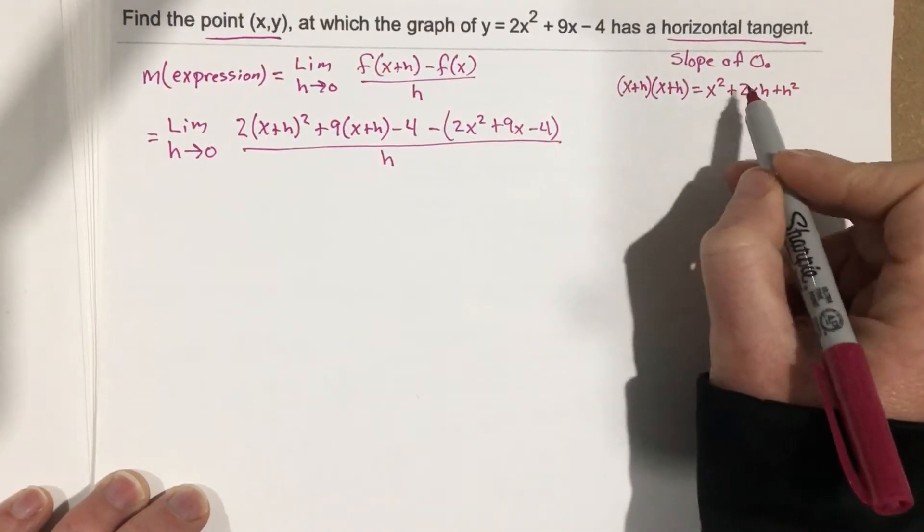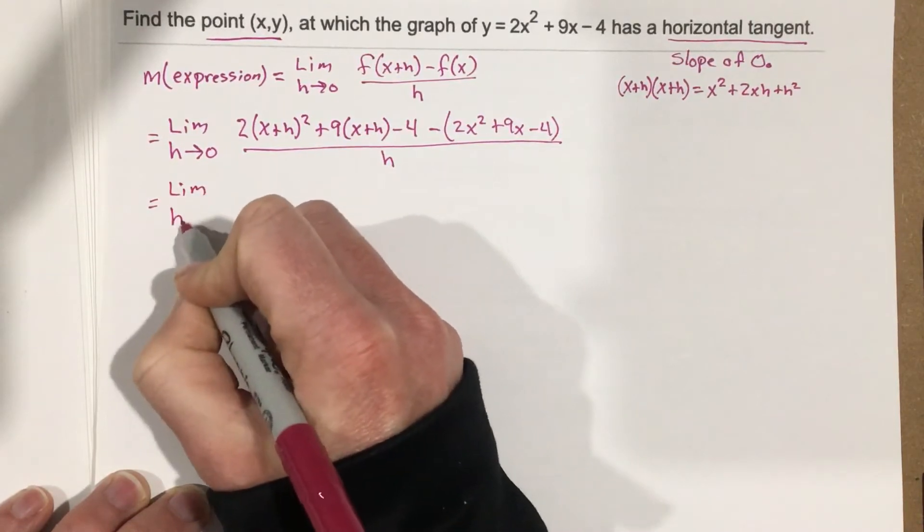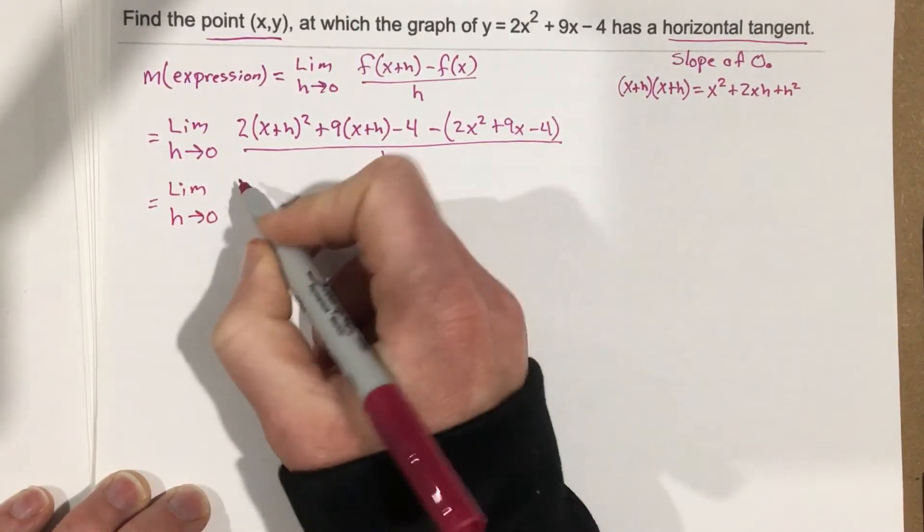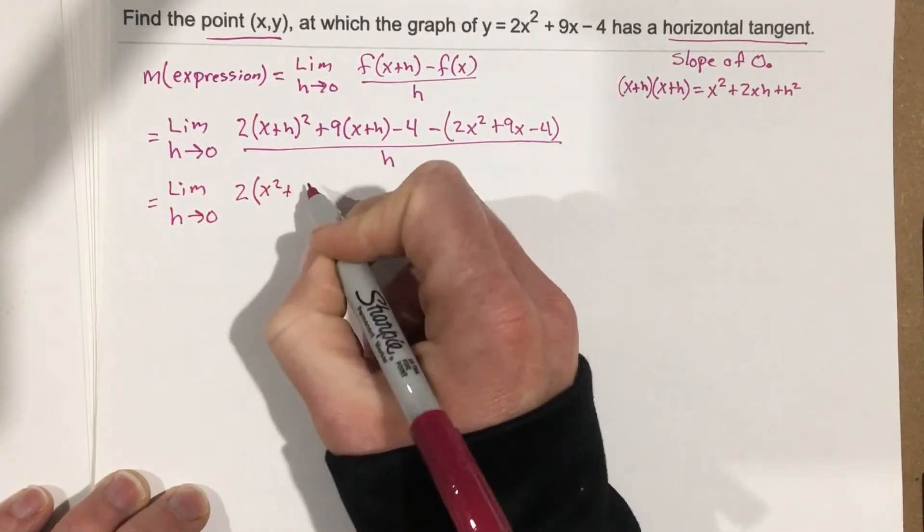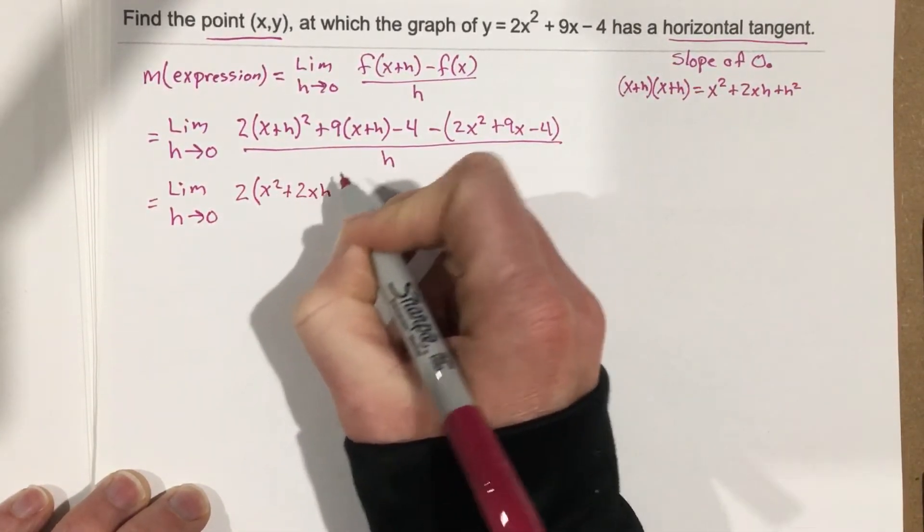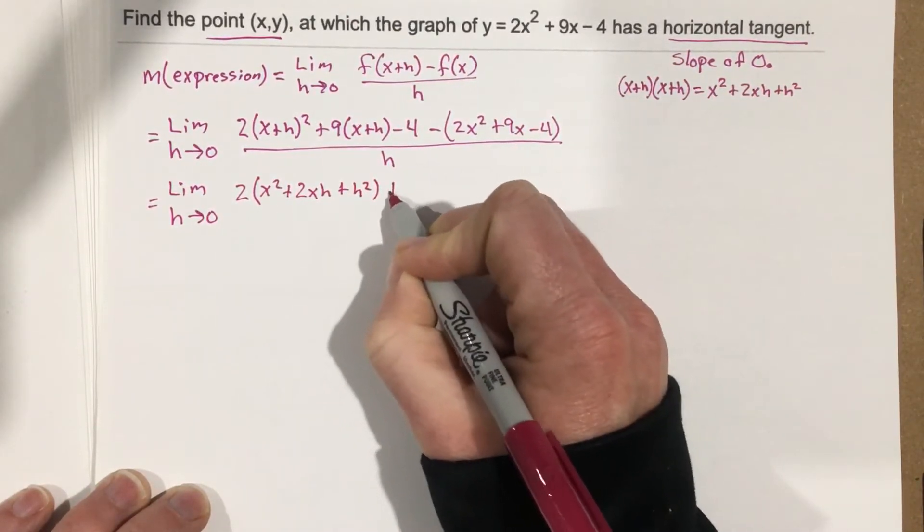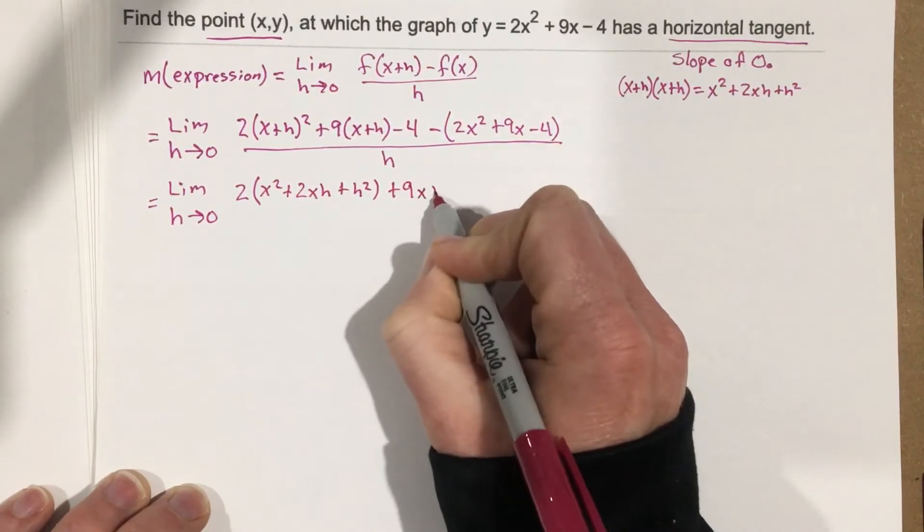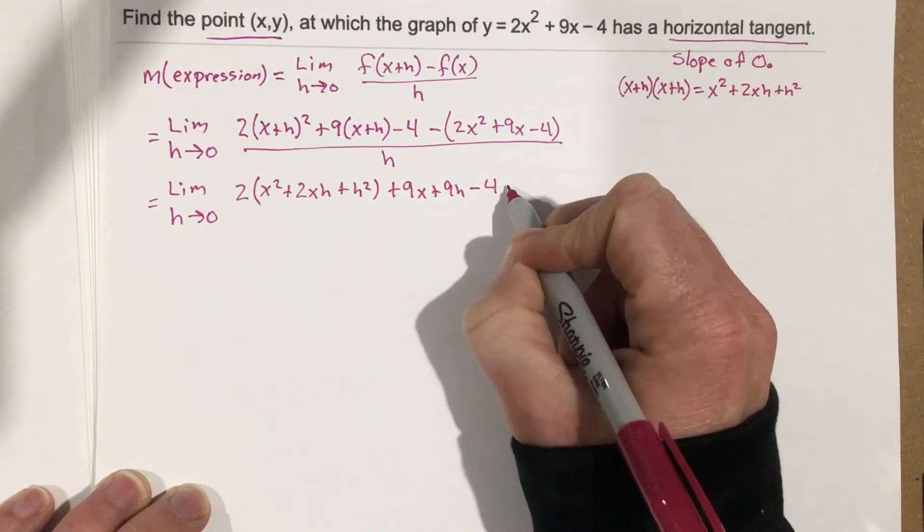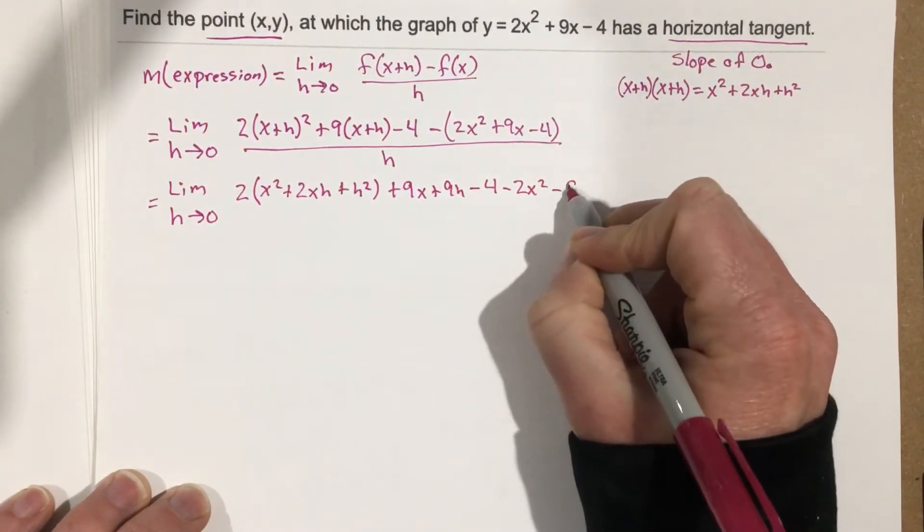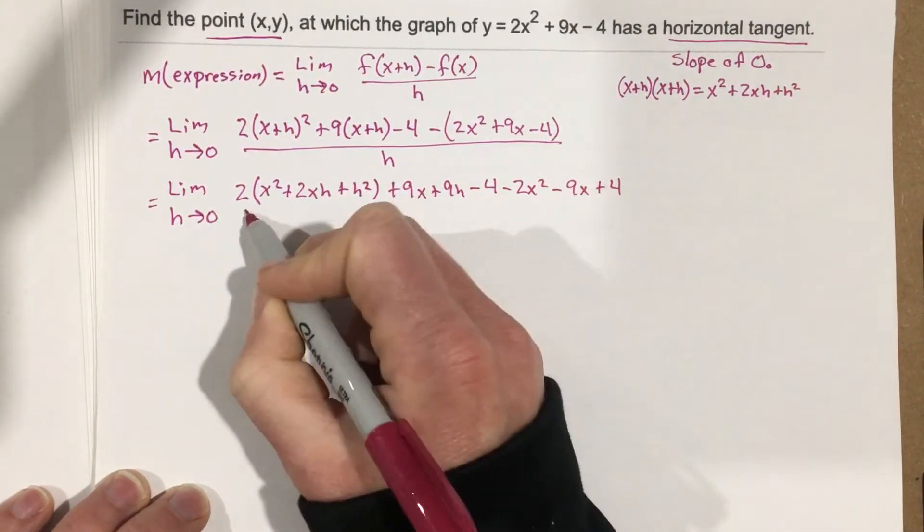We can plug this back into the formula, so we end up with limit as h approaches 0 of 2(x² + 2xh + h²), plus, I'm going to distribute this 9, so it's 9x + 9h, minus 4, minus 2x², minus 9x, plus 4. That's all over h.